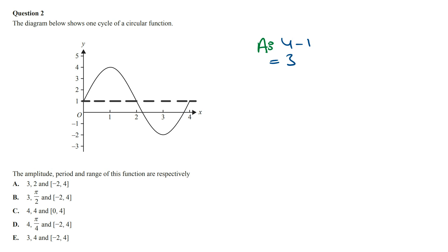The function starts when x equals zero and completes one full cycle when x equals four. This means the period is going to be four.